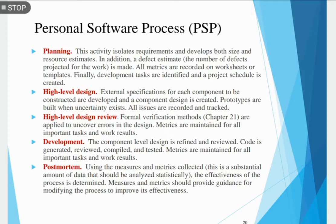The personal software process, or PSP, emphasizes personal measurement of both the work product that is produced and the resultant quality of the work product. PSP makes the practitioners responsible for project planning — for example, estimating and scheduling — and empowers the practitioners to control the quality of all software work products that are developed. The PSP process model defines five framework activities.